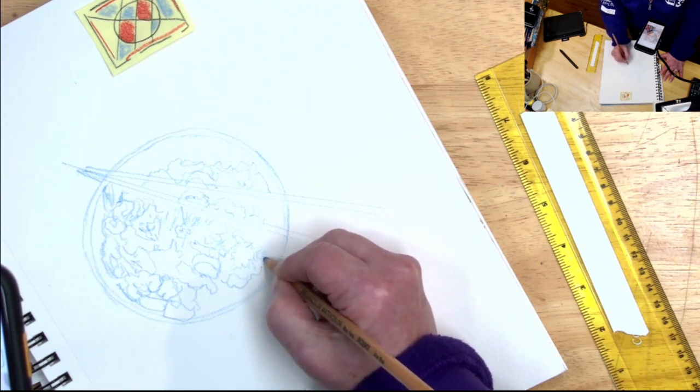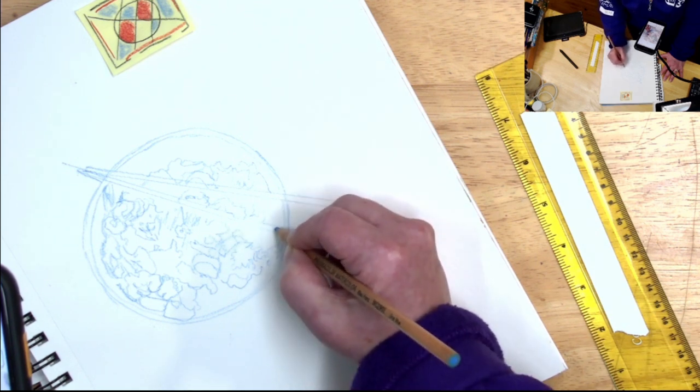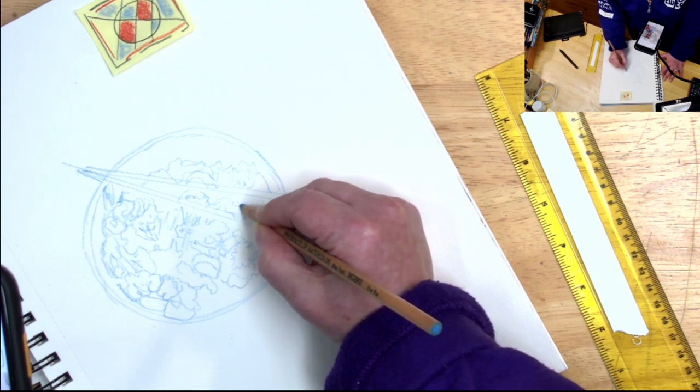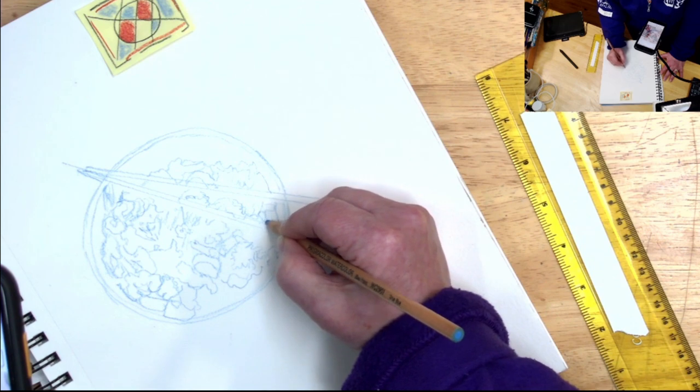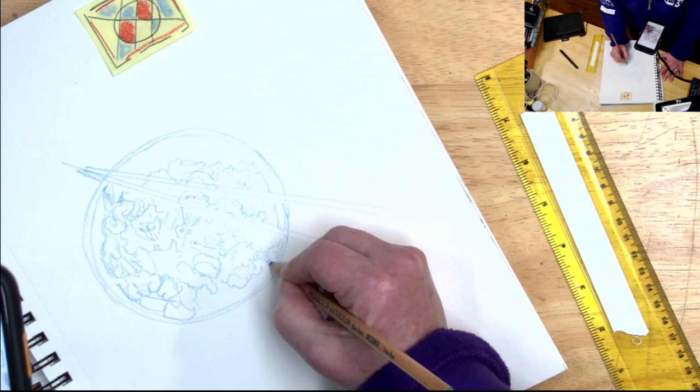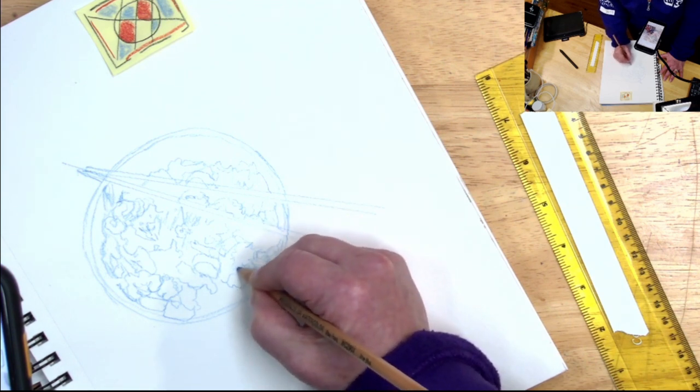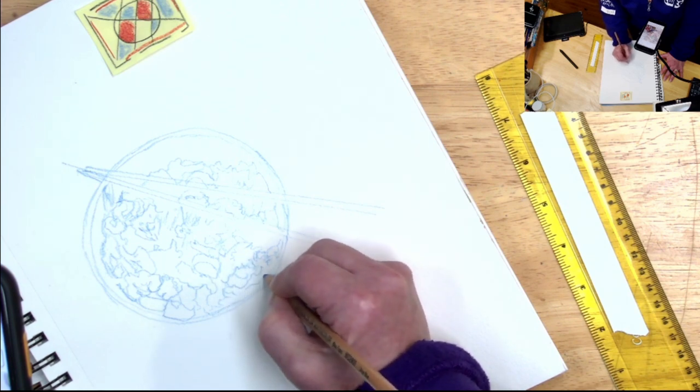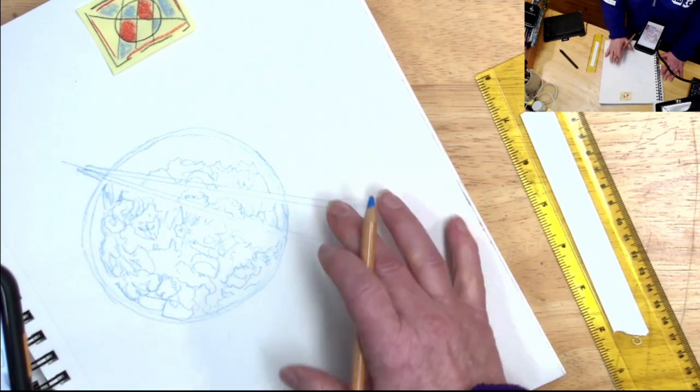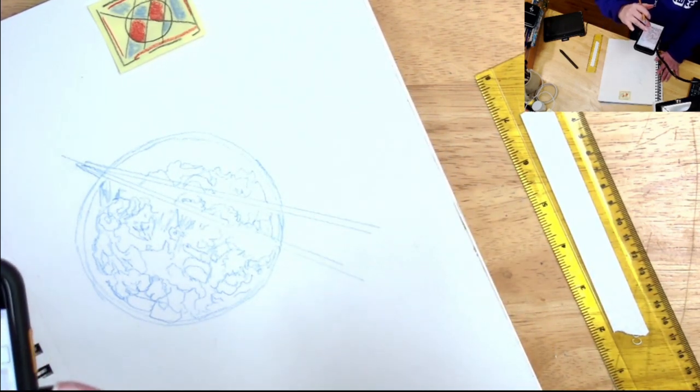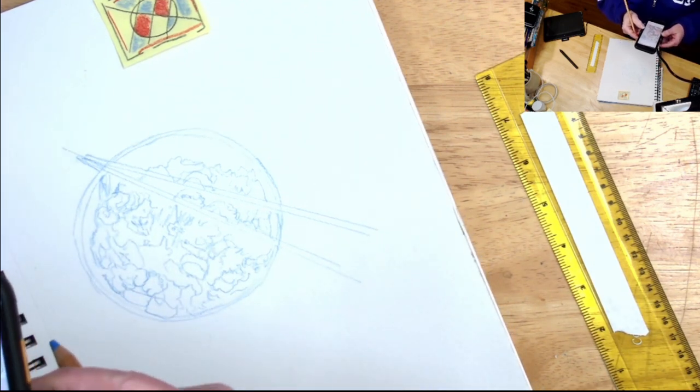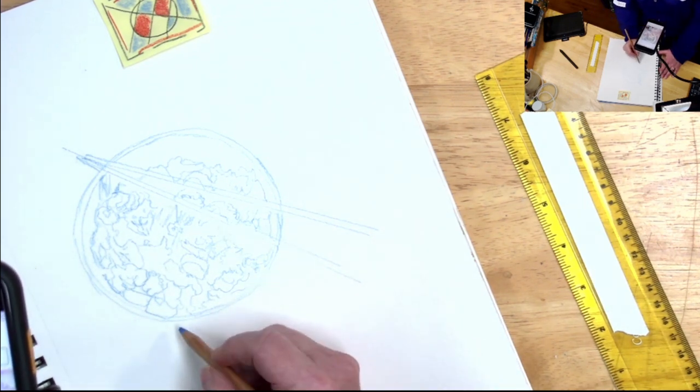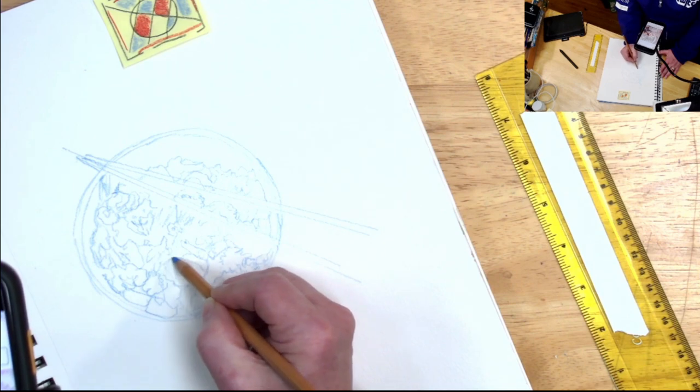That's the thing that I like about a program like this is I can get a pretty darn good representation. Without, I don't have to have a printer. I don't have to have any transfer paper. I could do this really small if I wanted to. So if I wanted to do it super small, I could set it up to be much smaller.